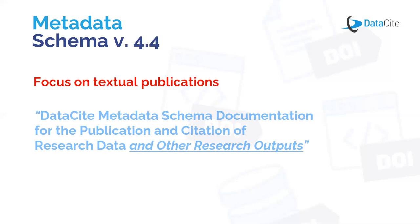The focus of 4.4 is to provide better support for textual publications. Although it has always been possible to register DOIs for text publications, there was a great need from the user community for metadata fields in which information related to text publications could be included in a structured way. And since we are not solely focusing on research data, we have decided to reflect that in the title of the documentation — you may have noticed that 'other research outputs' has been added to the end of the title.